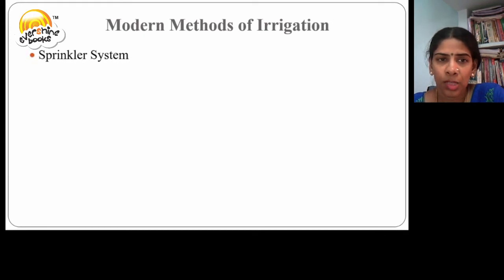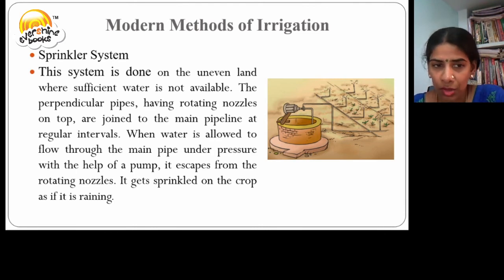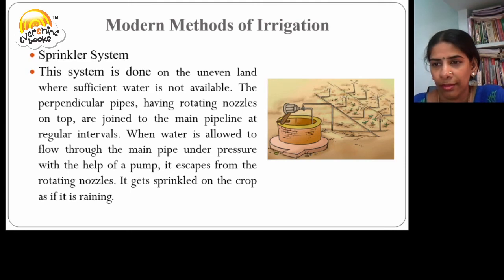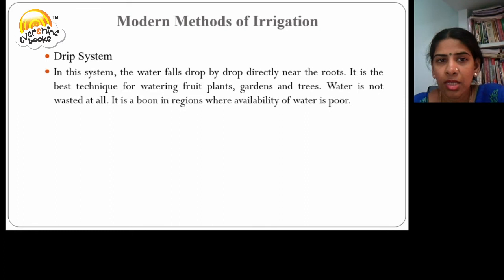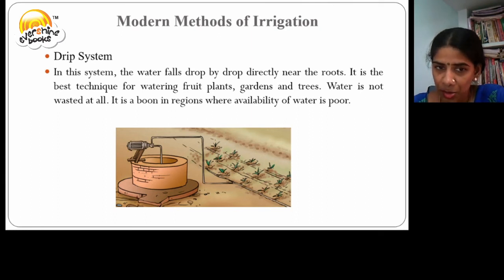Modern methods of irrigation. Sprinkler system: This system is used on uneven land where sufficient water is not available. Perpendicular pipes with rotating nozzles on top are joined to the main pipeline at regular intervals. When water flows through the main pipe under pressure with the help of a pump, it rotates and gets sprinkled on the crop as if it is raining. The second method is the drip system, where water falls drop by drop directly near the roots. It is the best technique for watering shrubs, gardens and trees. Water is not wasted in the drip system and it is a boon in regions where availability of water is poor.